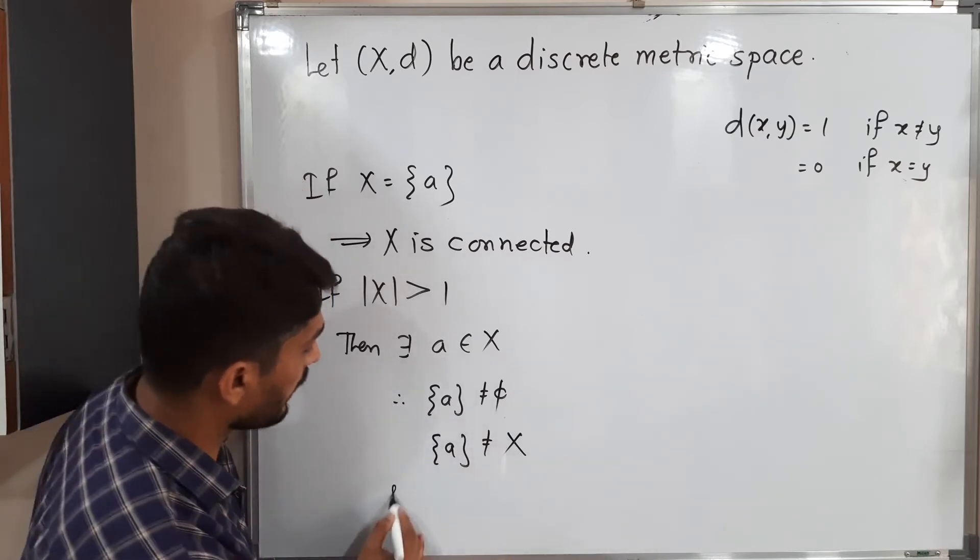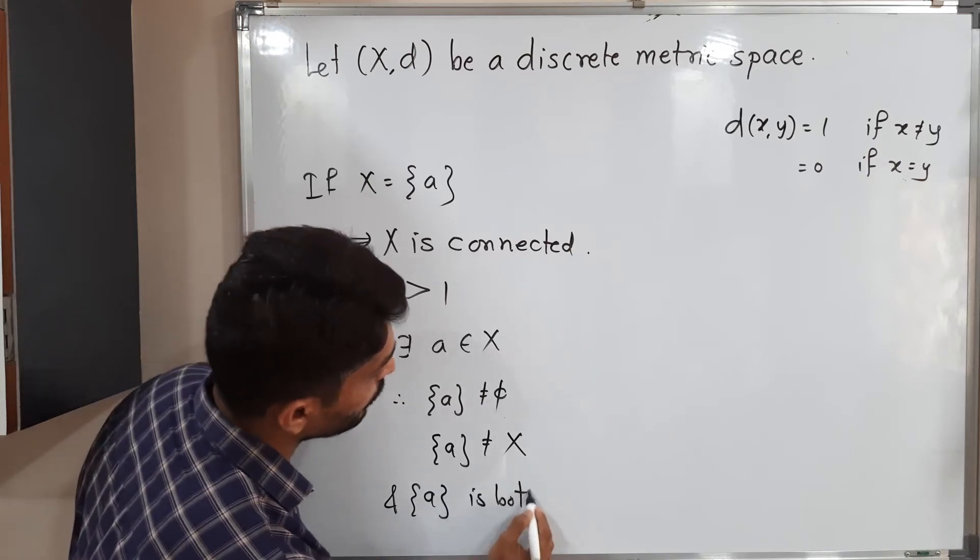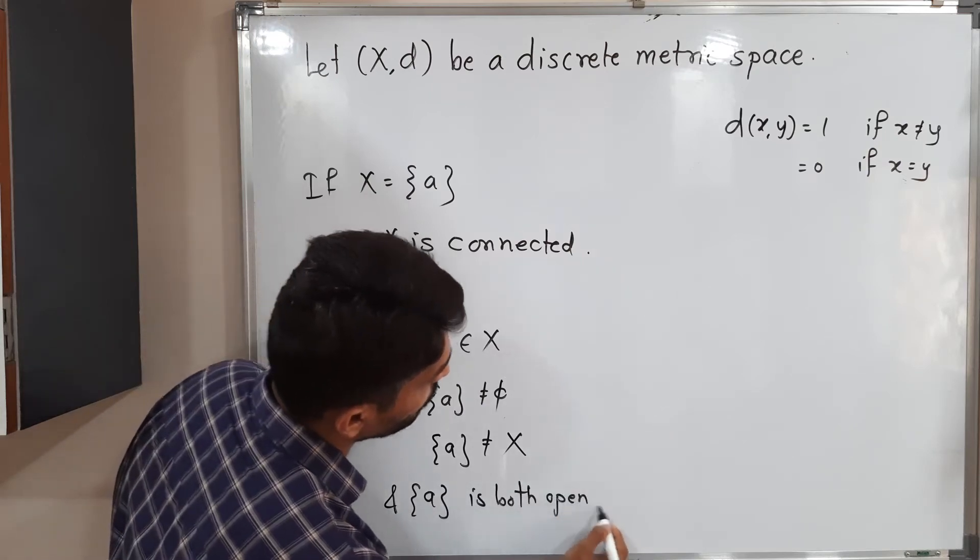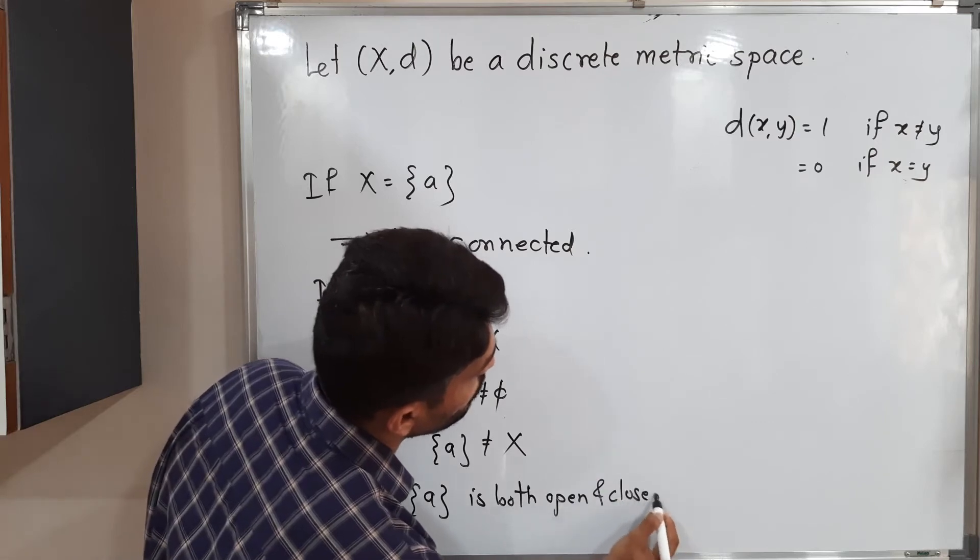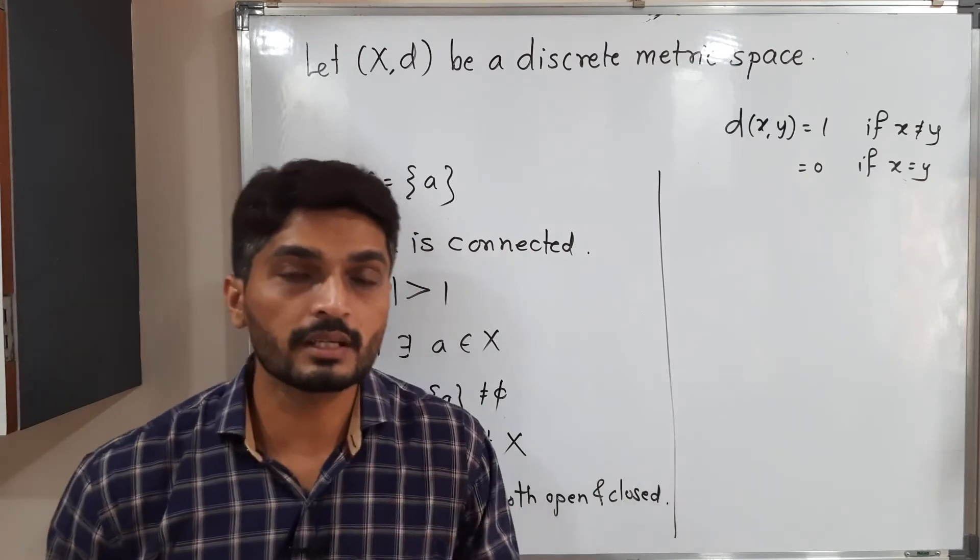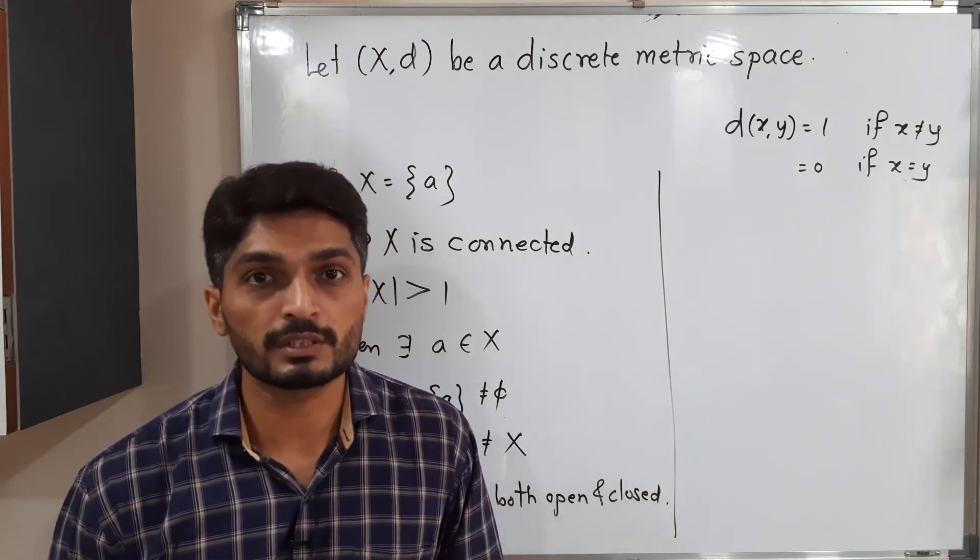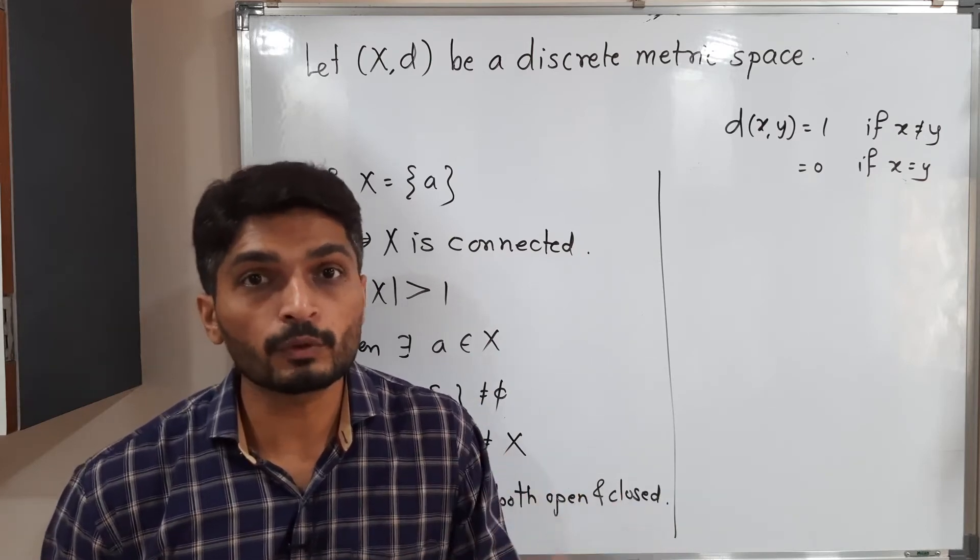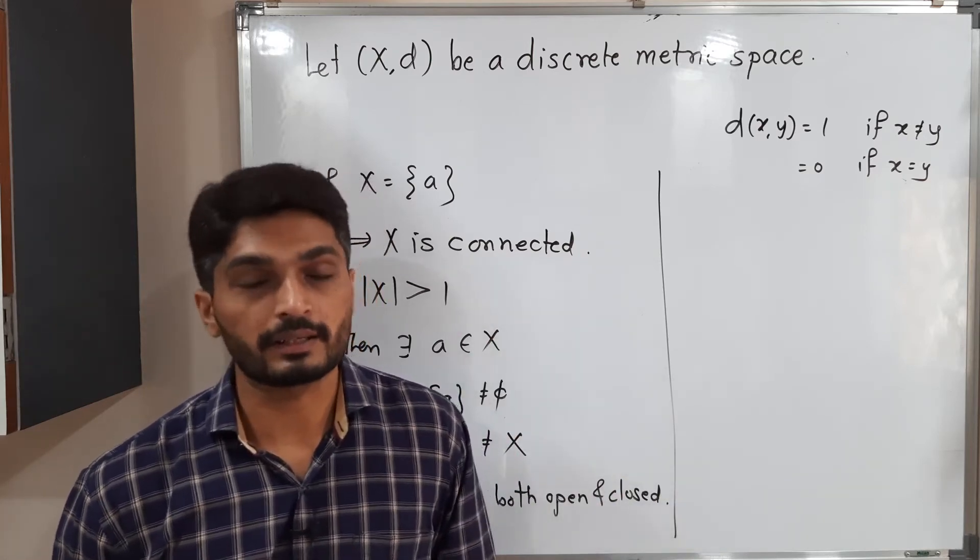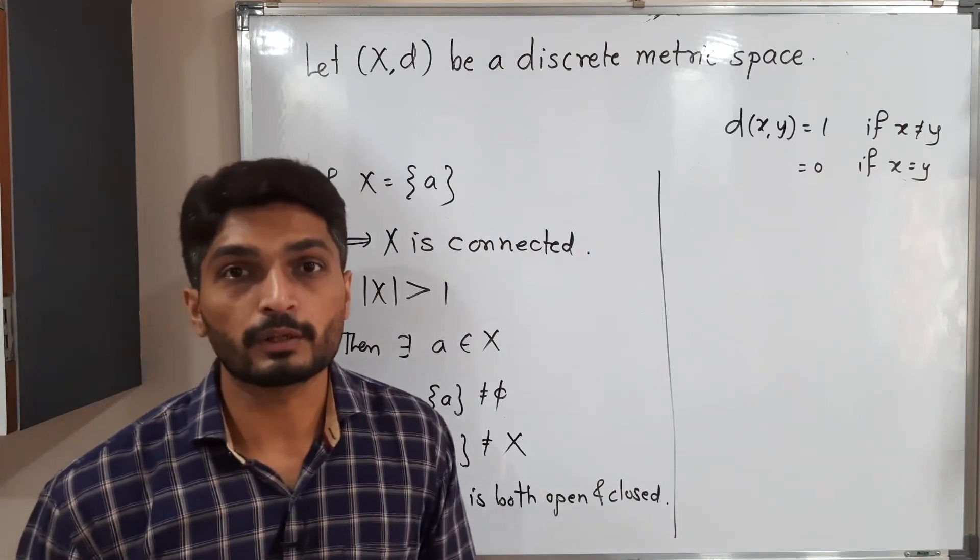And singleton set {a} is both open and closed. Since we know that in a discrete metric space, every set is both open and closed. Or in the topology of a metric space, we say if every set is both open and closed, then it is a discrete metric. Since this is a discrete metric, therefore it is both open and closed.